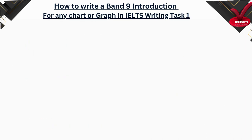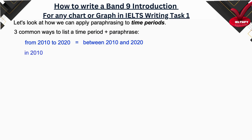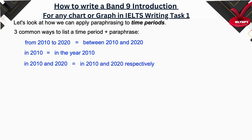Now let's look at how we can apply paraphrasing to time periods. Here are three common ways to express a time period and their paraphrases: 'From 2010 to 2020' or 'between 2010 and 2020.' For a single year: 'In 2010' or 'in the year 2010.' For two years: 'In 2010 and 2020, respectively' or 'in the years 2010 and 2020.'